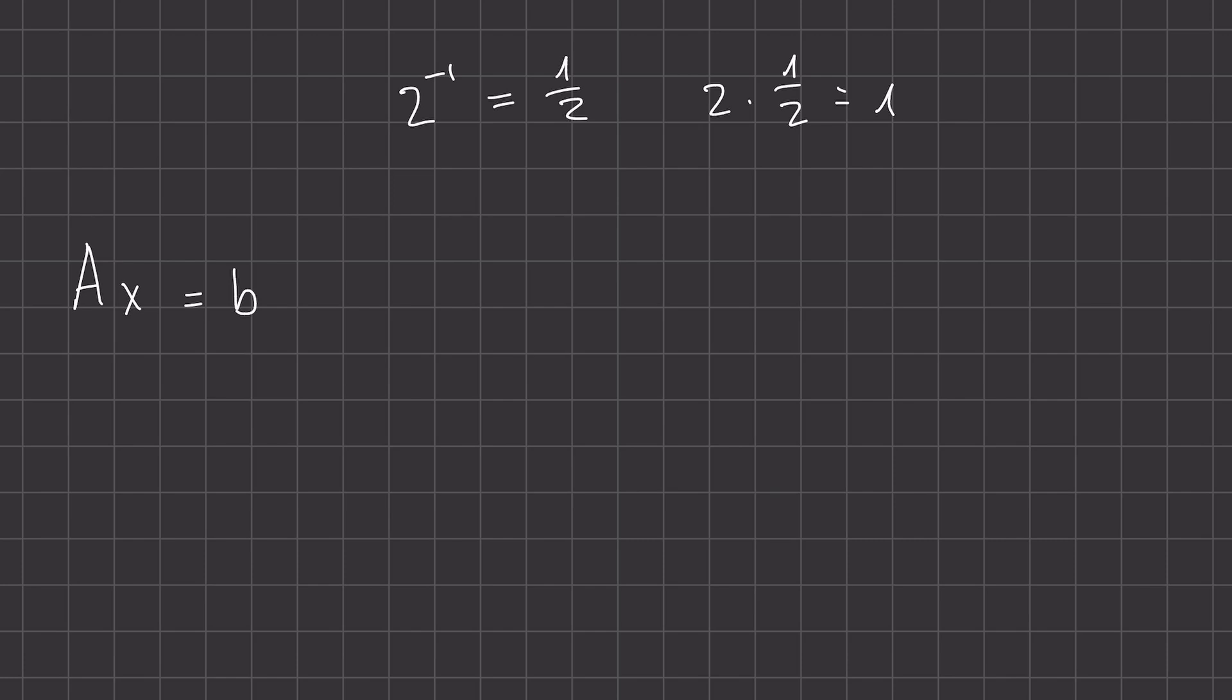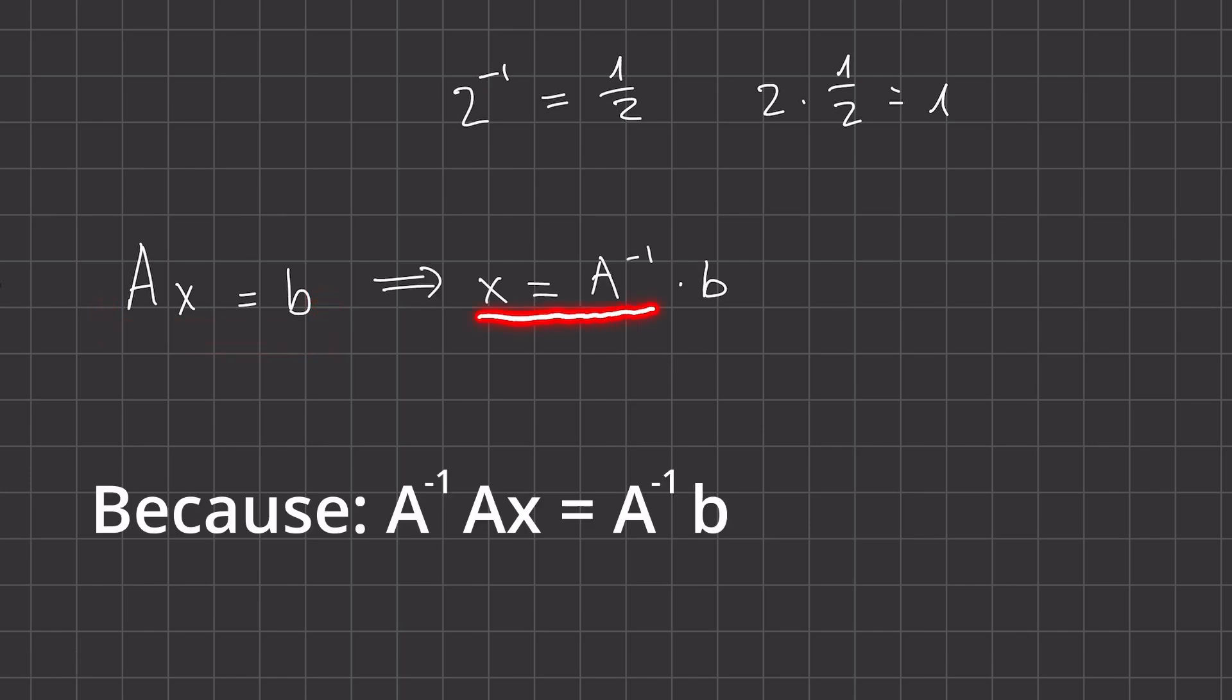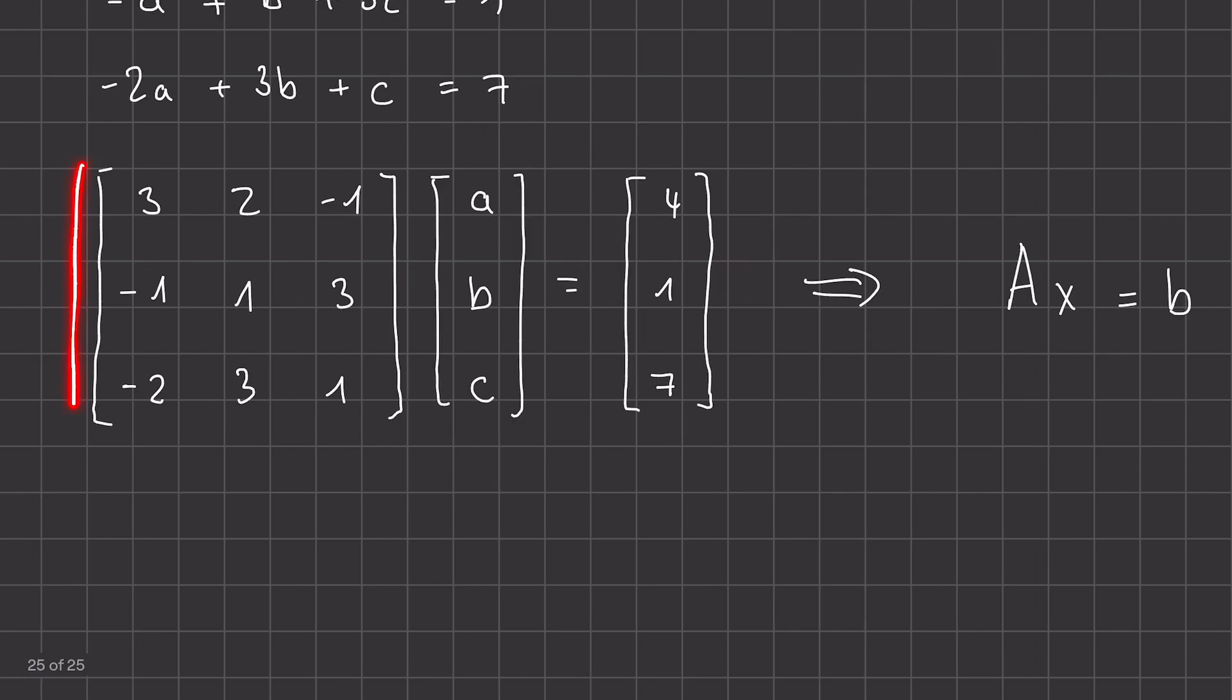And this then allows us to simply with this formula here, give ourselves the solution X equals the inverse of A times B. Now, whether this inverse actually exists depends on the exact entries in the matrix. But in case it exists, it allows us with a simple multiplication of the inverse of this matrix and this vector to get our results for A, B and C immediately.